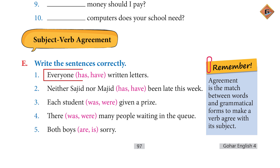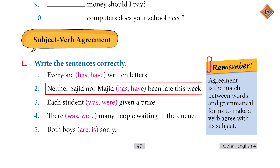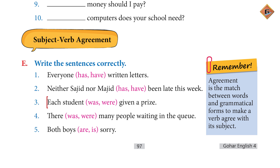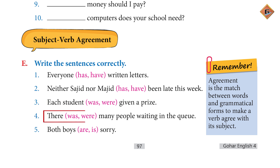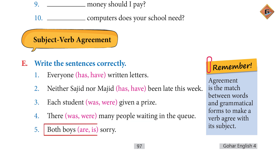One: 'Everyone ___ written letters.' Answer: Everyone has written letters. Two: 'Neither Sajid nor Majid ___ been late this week.' Answer: Have been late this week. Three: 'Each student ___ given a prize.' Answer: Was given a prize. Four: 'There ___ many people waiting in the queue.' Answer: There were many people waiting in the queue. Five: 'Both boys ___ sorry.' Answer: Are sorry.